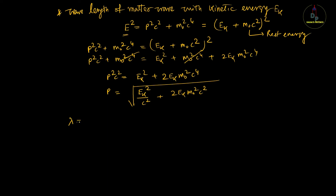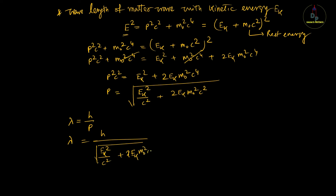According to the de Broglie wavelength, λ = h/p. So λ = h / √(E_k²/c² + 2E_k·m₀²c²).